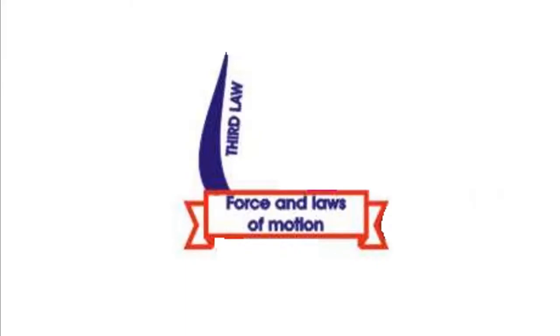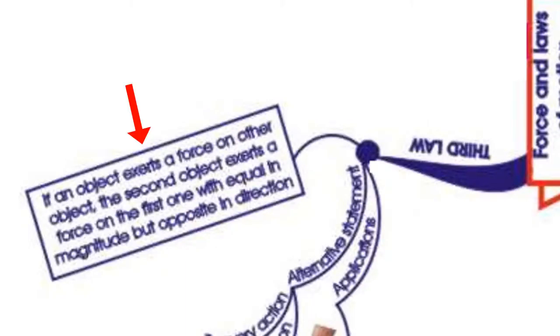See the fourth branch, third law. Newton's third law states that if an object exerts a force on other object, the second object exerts a force on the first one with equal in magnitude but opposite in direction.